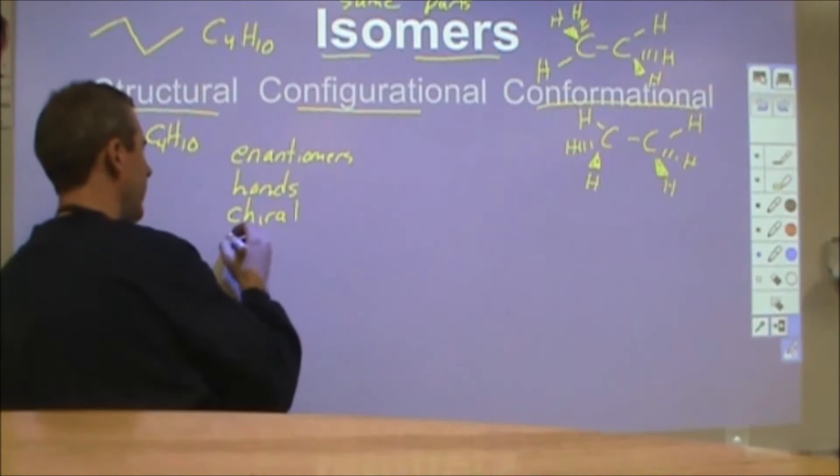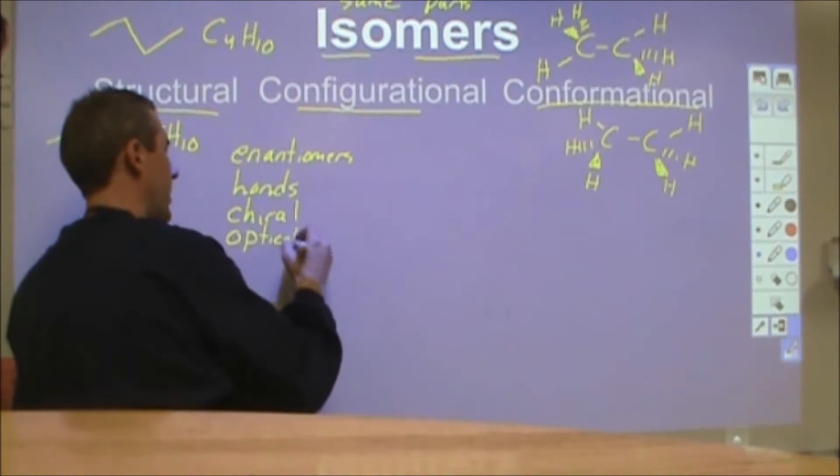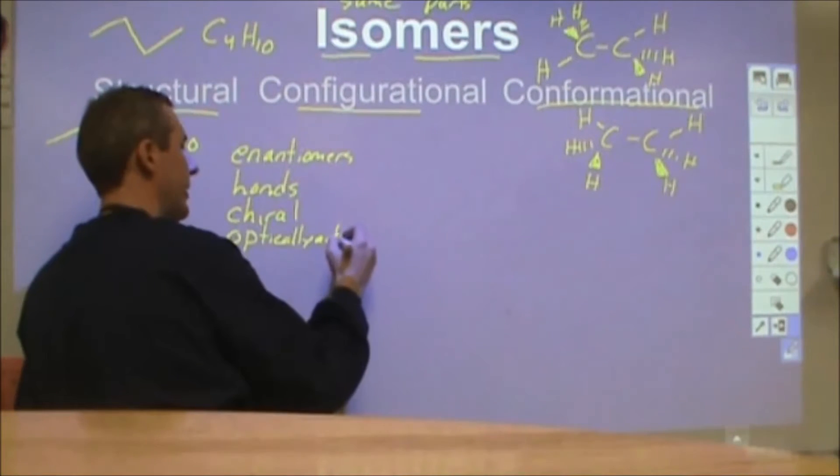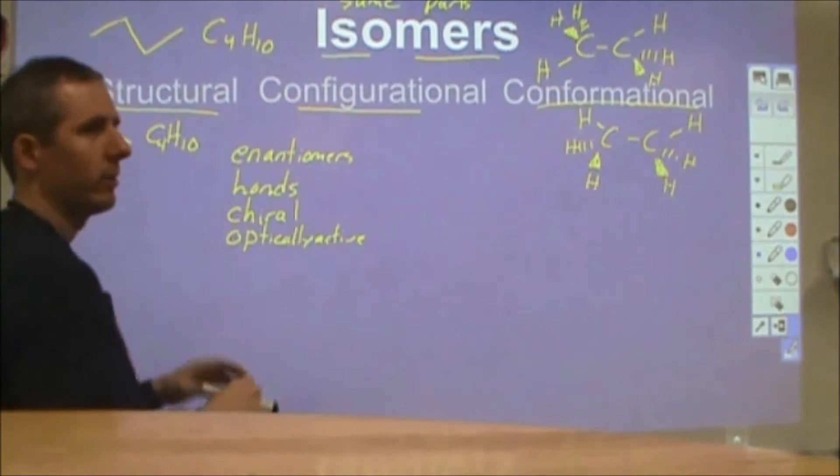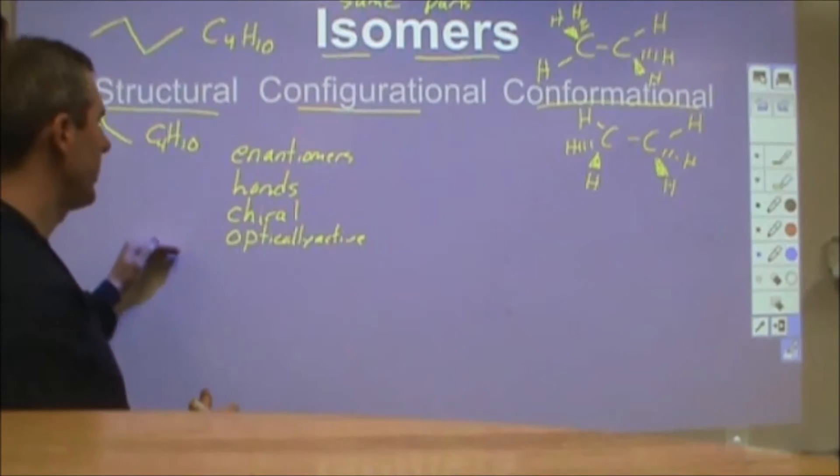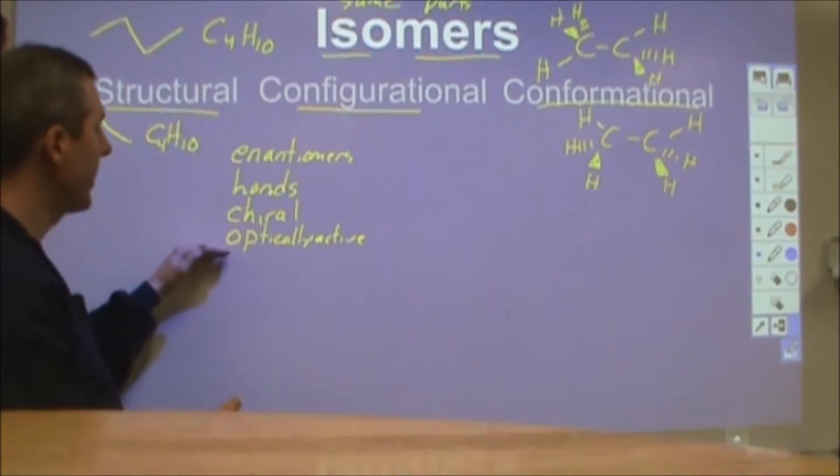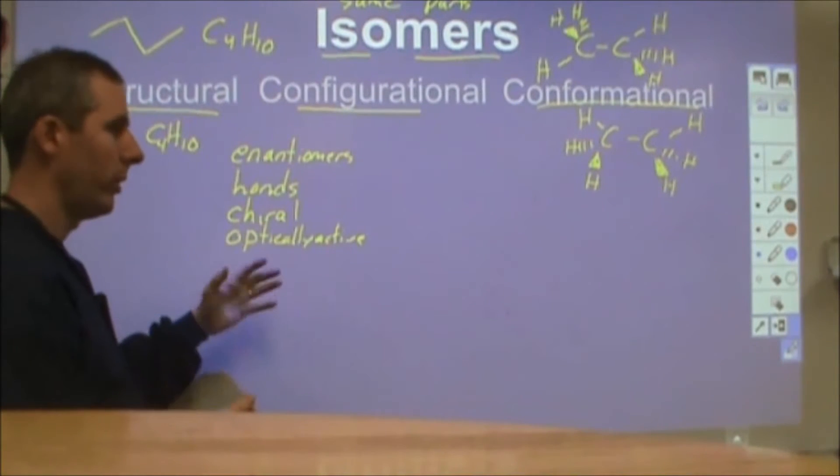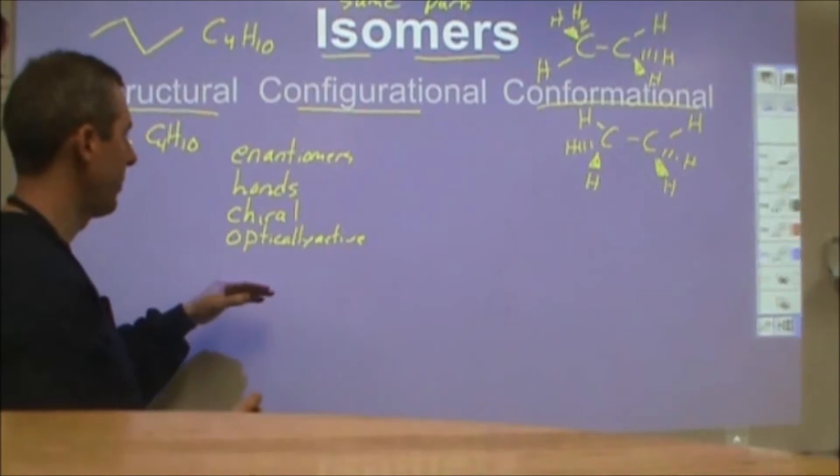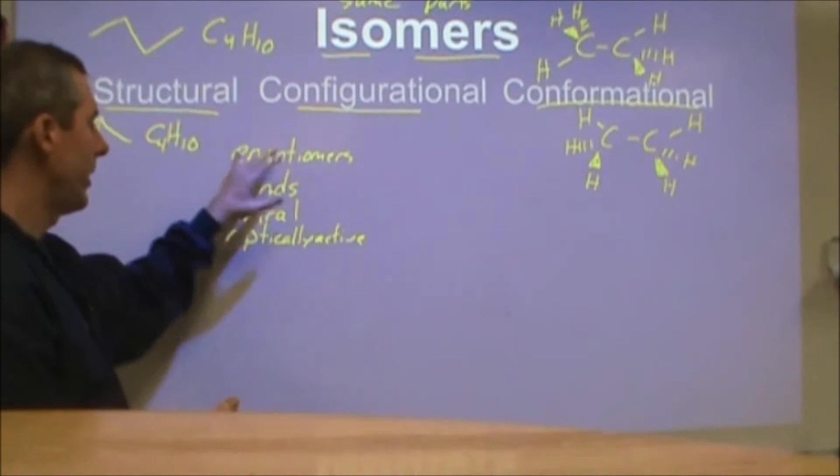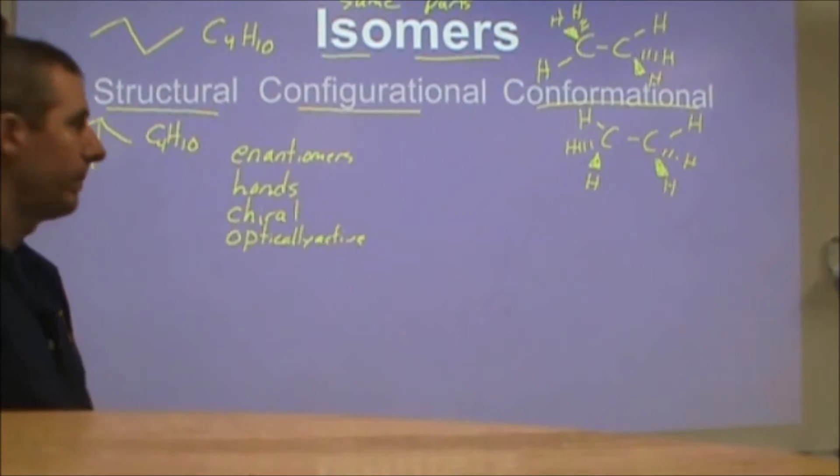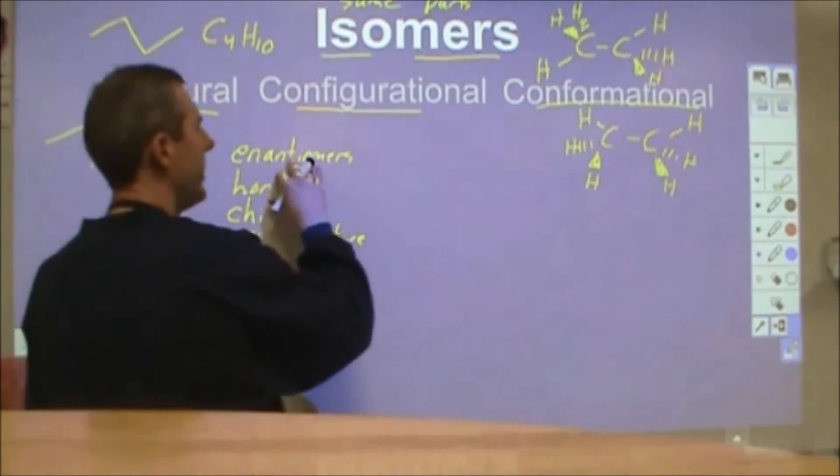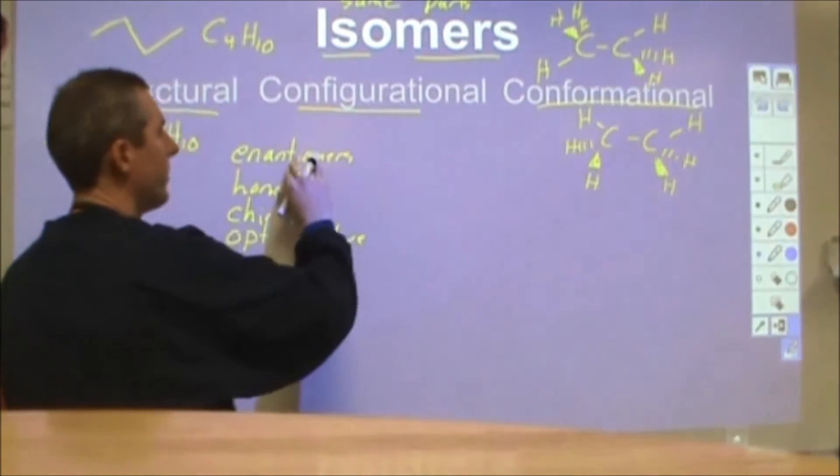Chiral is going to be a word that's associated with enantiomers, chiral meaning the mirror image as well. Enantiomers have an interesting property, they're what's called optically active. Essentially they interact with light in a specific way. Specifically polarized light that hits an enantiomer will rotate its plane of polarization and then come out different than before.